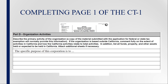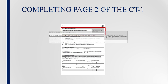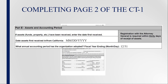On page 2 of Form CT-1, if assets such as funds or property have been received, enter the date first received. Assets include anything of value to the charity and may include donations or grants from California residents, foundations, corporations, and governmental agencies.